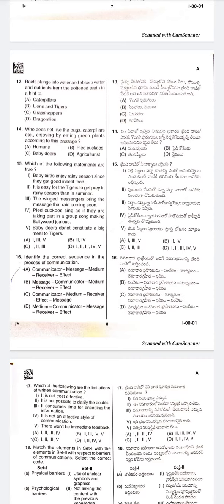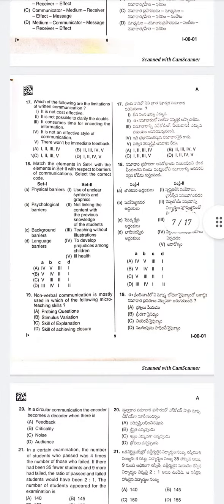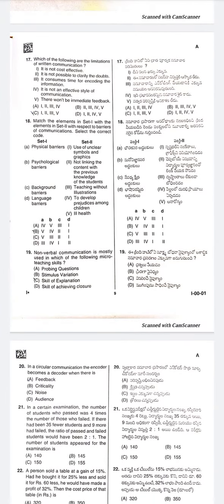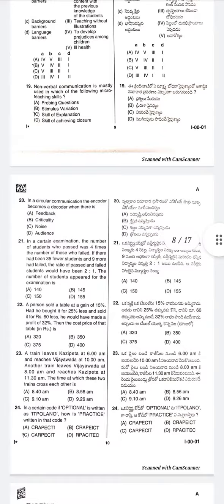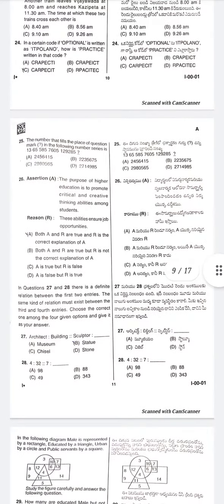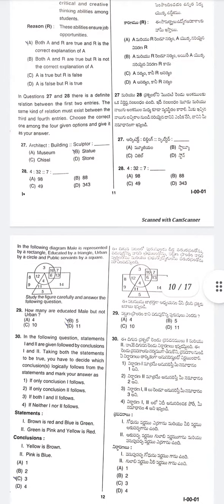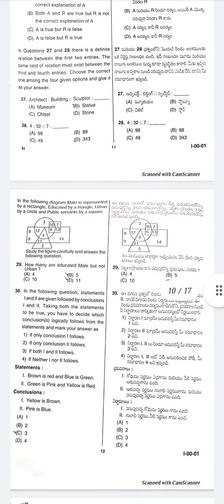As you know, Paper 1 is a general paper and this paper is the same for all subjects. It is also a compulsory paper and you need to get qualified in Paper 1. The paper consists of 10 units and from each unit you will get 5 questions, making altogether 50 questions and 100 marks.